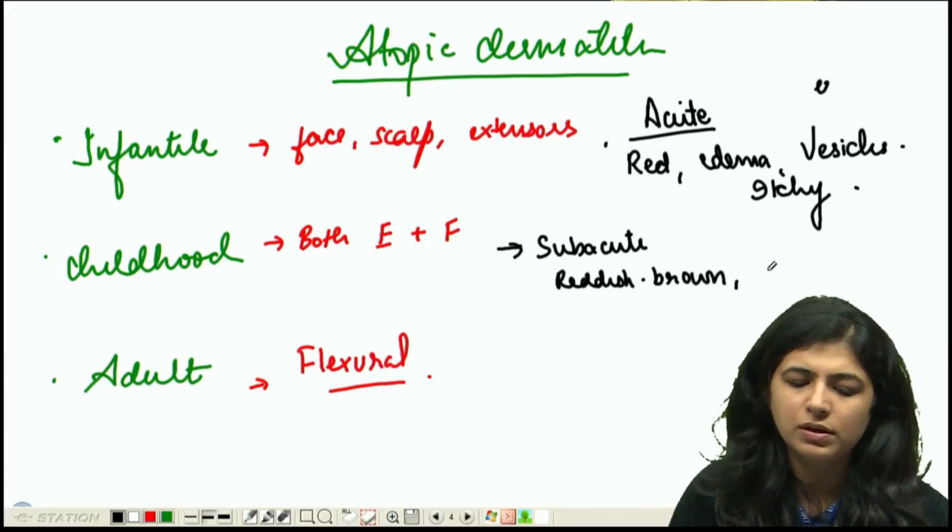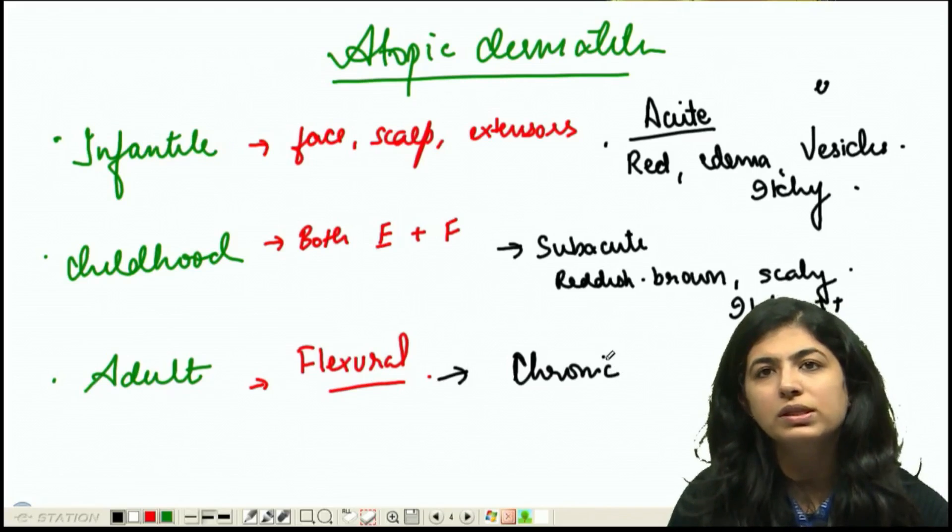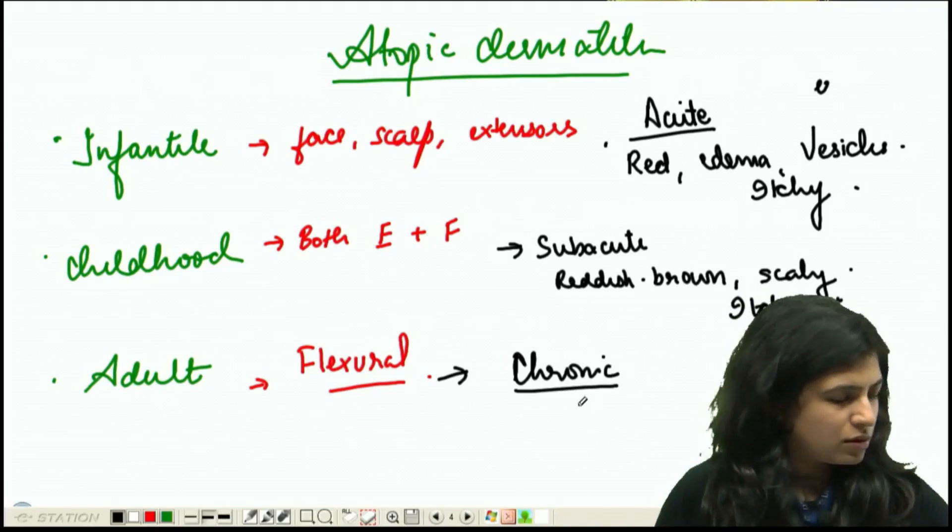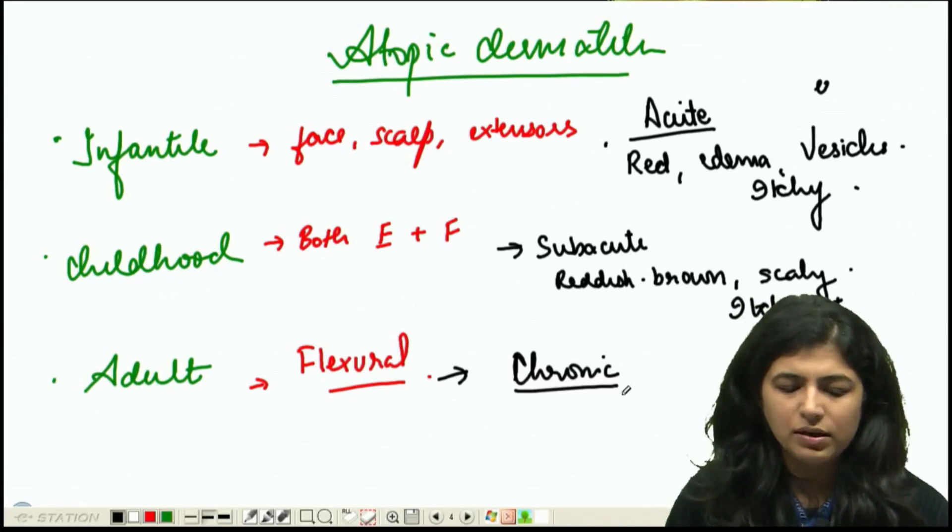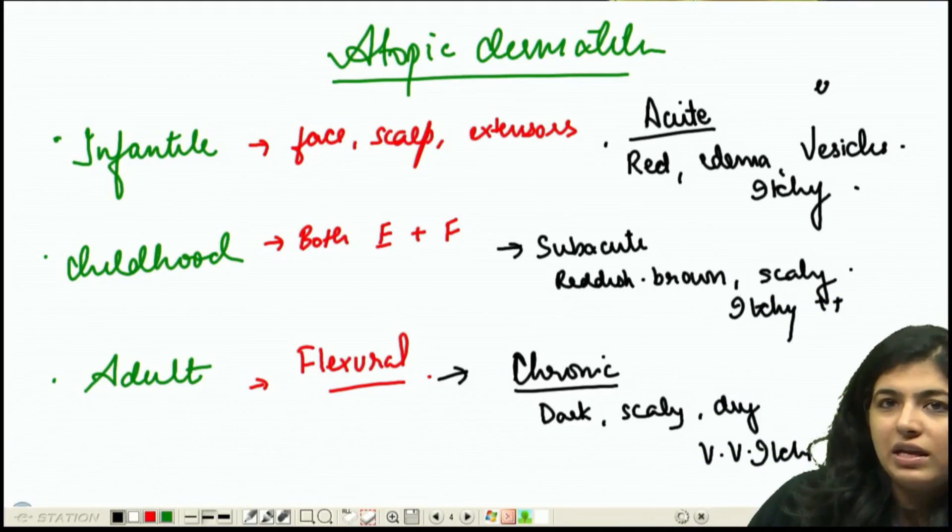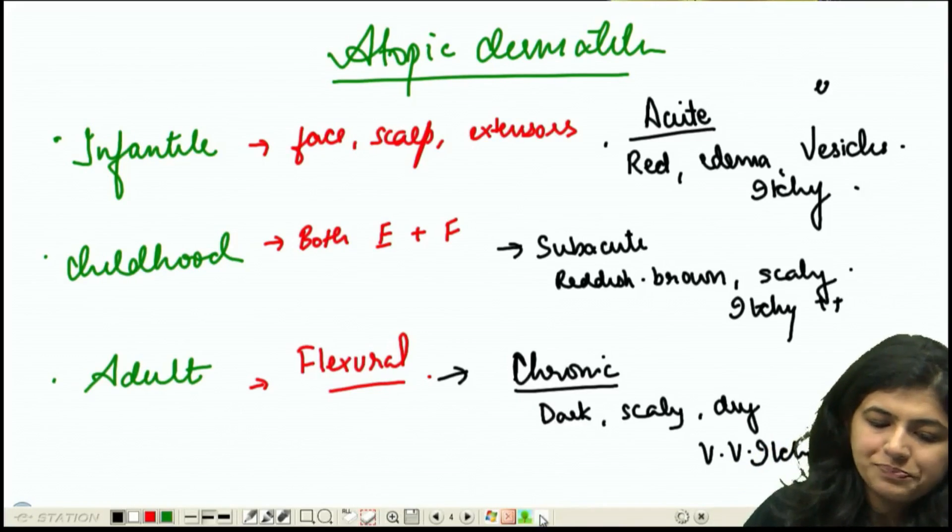It will be reddish brown and slightly scaly, involving the flexures. In an adult it gives you more of a chronic picture - chronic lichenified lesions that look dark, scaly, dry, and very very itchy. That's adult atopic dermatitis.